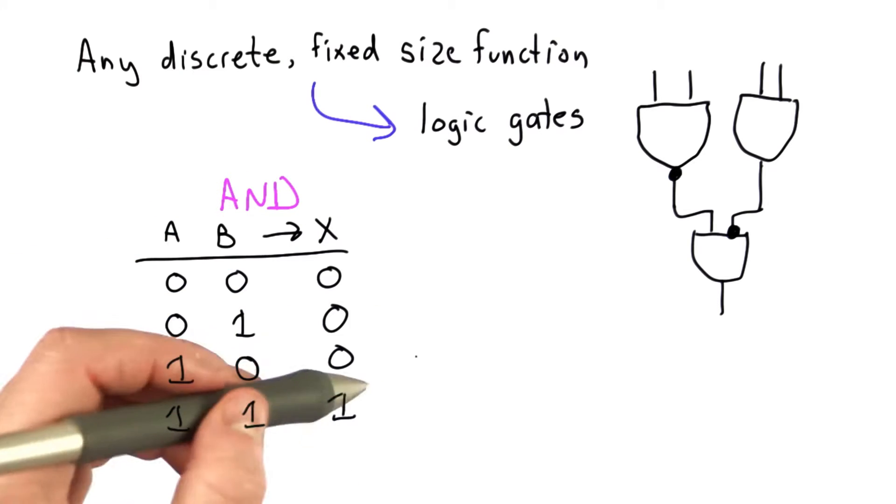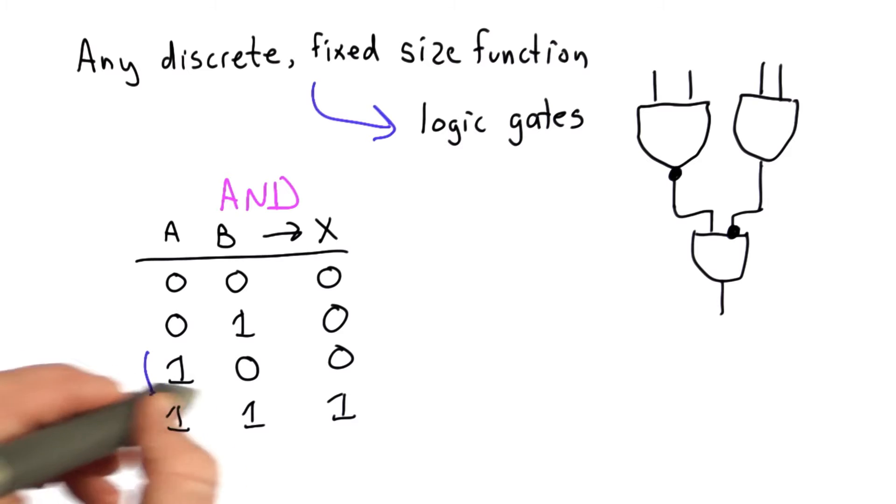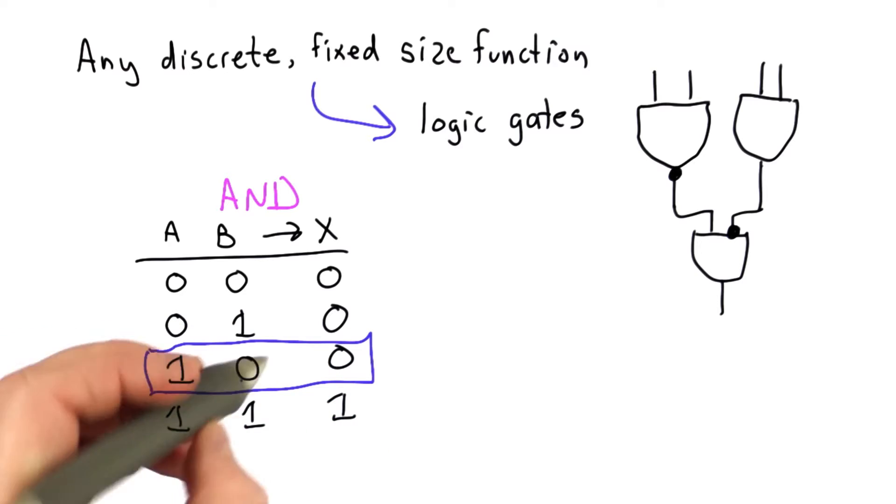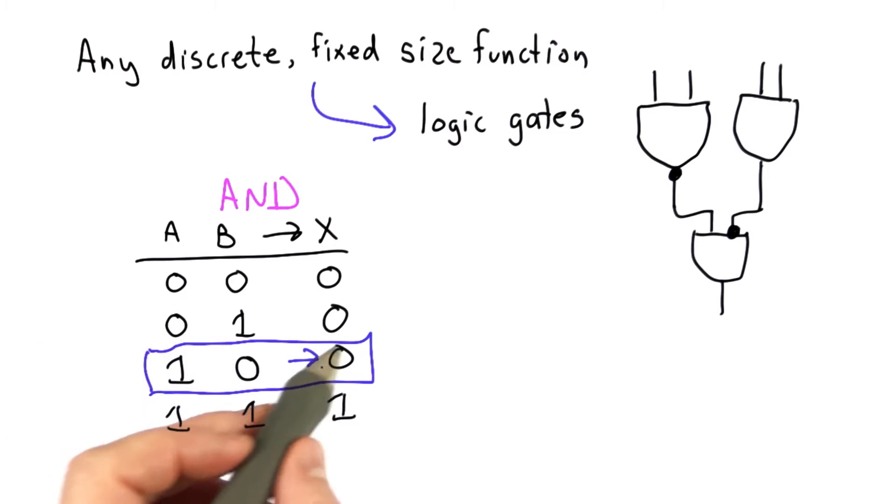If we evaluate the AND gate, we need to know the actual values of A and B. Suppose the value of A is 1 and the value of B is 0. Then we would take this line from the truth table and know that the output has the value 0.